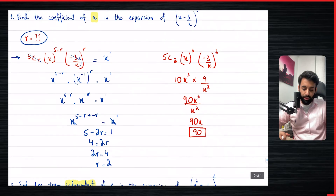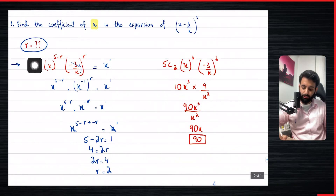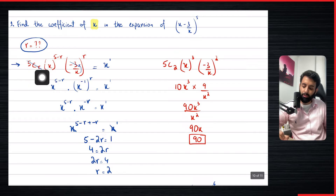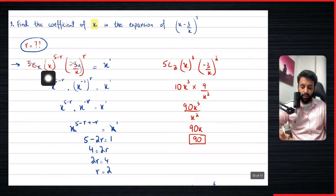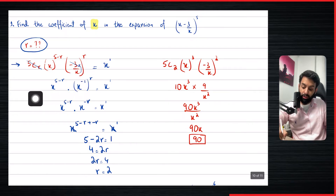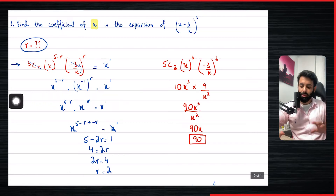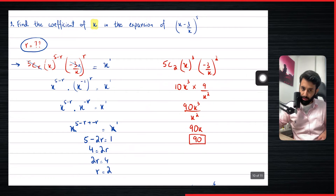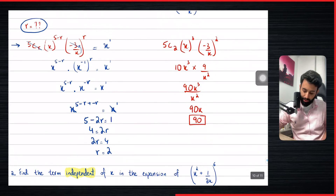We end up with 90x, so the coefficient of x is 90. To recap the method: write the general term with r unknown, isolate all terms involving x and ignore everything else, move x from the denominator to the numerator so it becomes x^(−1), then solve the equation of powers to find r, and finally substitute r back to find the coefficient.